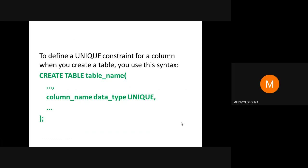The unique constraint is an integrity constraint that ensures values in a column or a group of columns are unique. A unique constraint can either be a column constraint or a table constraint. To define a unique constraint for a column when you create a table, you use the syntax: CREATE TABLE table_name, then define your columns, and for the column you want unique, you specify the column name, the data type, and the keyword UNIQUE.